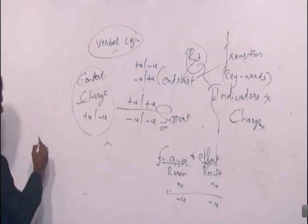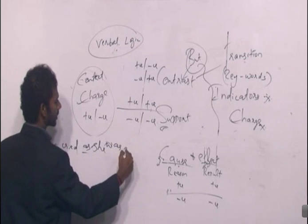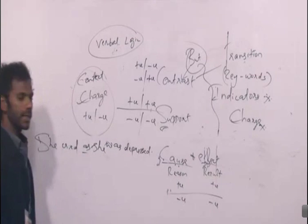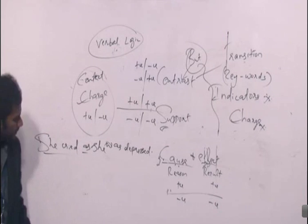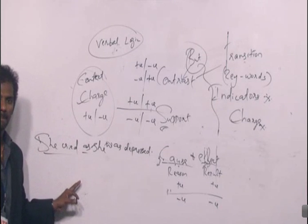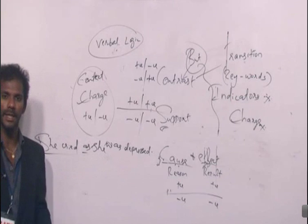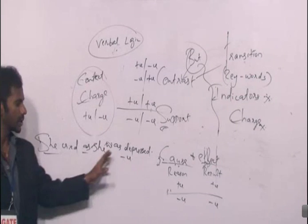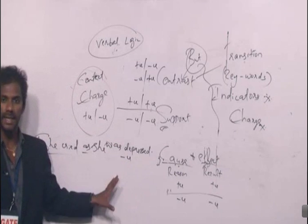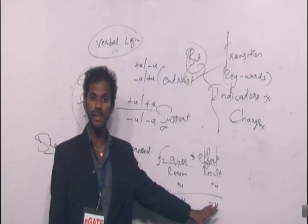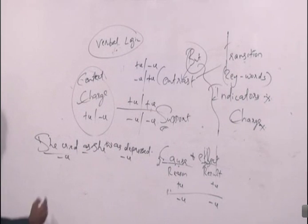What about: 'She cried as she was depressed'? Here 'as' is a cosmic indicator. In this context, 'she cried' — is it negative or positive? It is negative. What is the reason? 'She was depressed' — that is negative. The reason is negative, so the result must also be negative. So in this context, 'she cried' is negative.